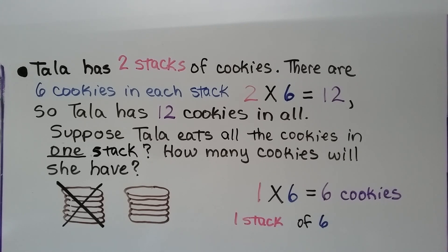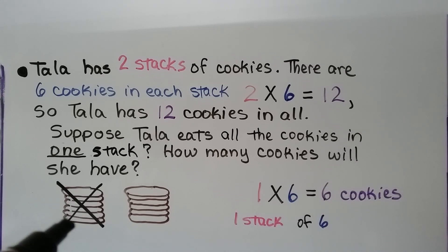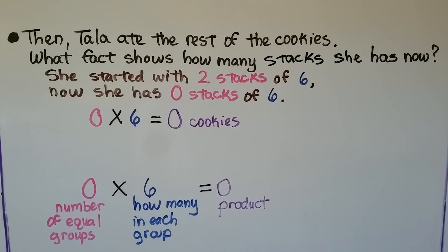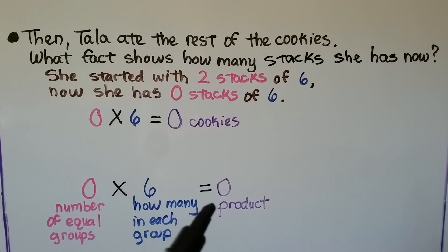Tala has 2 stacks of cookies with 6 cookies in each stack. 2 times 6 is equal to 12, so Tala has 12 cookies in all. Suppose Tala eats all the cookies in 1 stack — she'll have 1 stack of 6, and 1 times 6 is equal to 6 cookies. Then Tala ate the rest of the cookies. Now she has 0 stacks of 6. 0 times 6 is equal to 0 cookies. That's 0 equal groups with 6 in each group, and the product is 0.